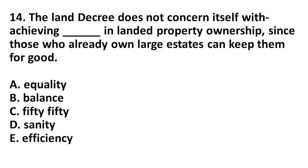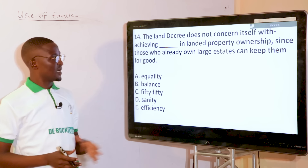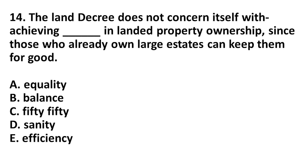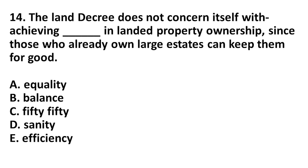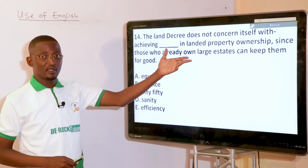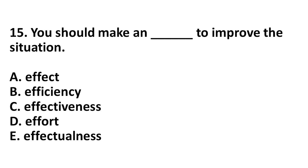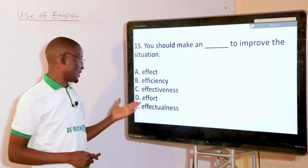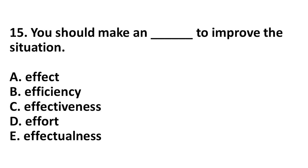The land decree does not concern itself with achieving dash in landed property ownership, since those who already own land estates can keep them. Options: equality, balance, 50-50, sanity, efficiency. Talking about land decree, the answer is balance — it doesn't concern itself with balance in achieving the landed property. Next: you should make a dash to improve the situation. Options: effect, efficiency, effectiveness, effort, effectualness. The answer is effort — option D — you should make an effort to improve the situation.